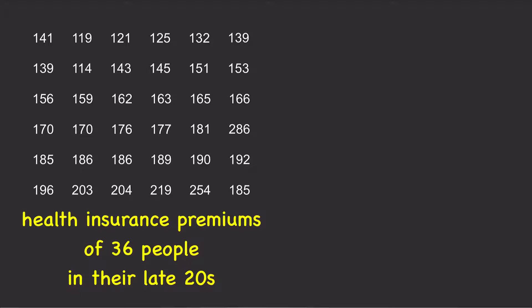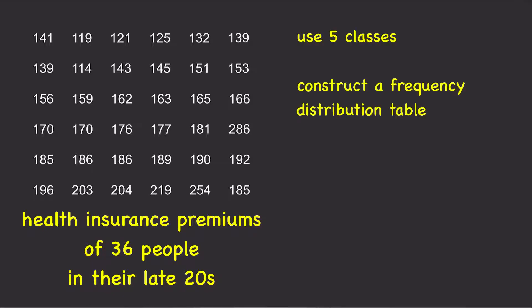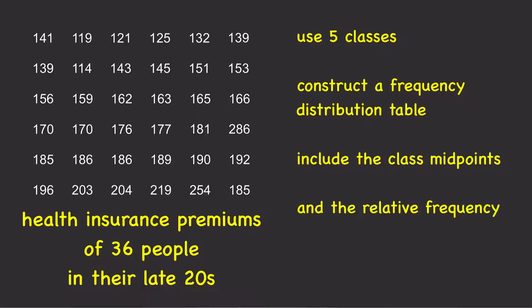This dataset contains the health insurance premiums for 36 people who were in their late 20s in 2014. Using five classes, construct a frequency distribution table that includes the class midpoints and the relative frequency.